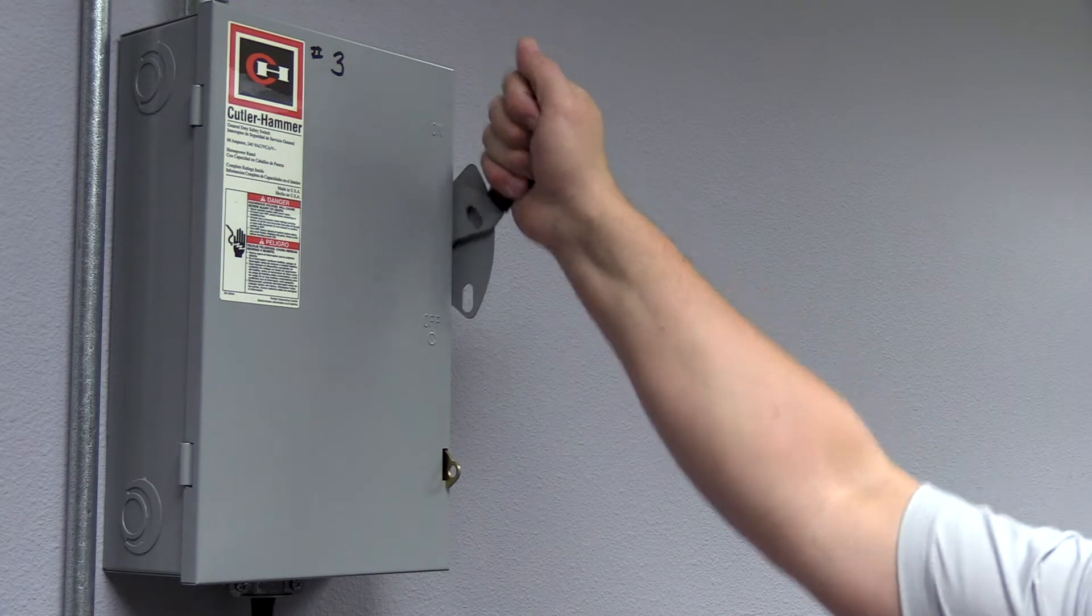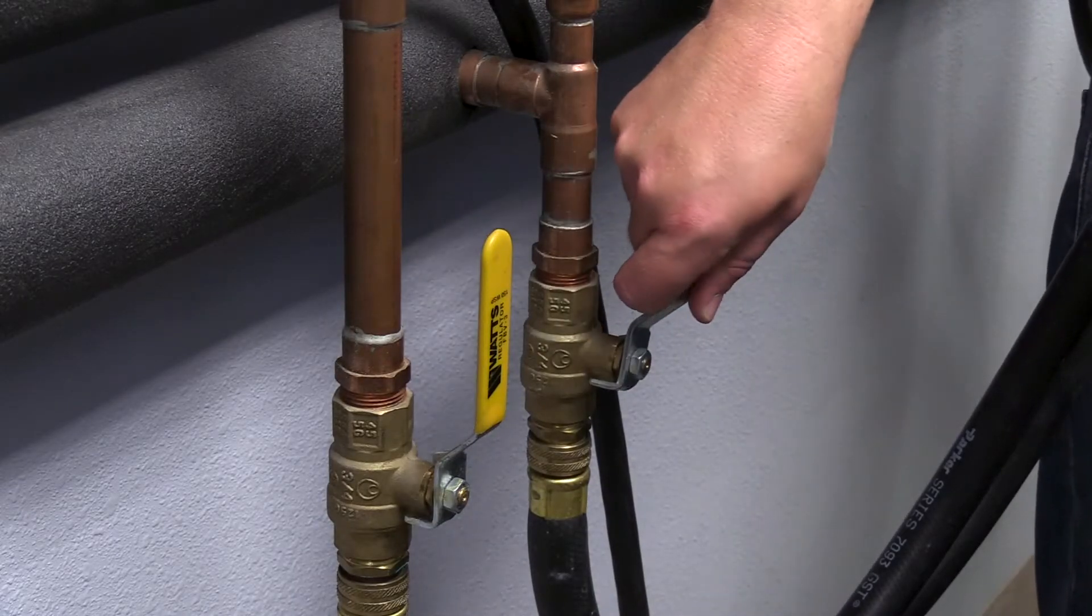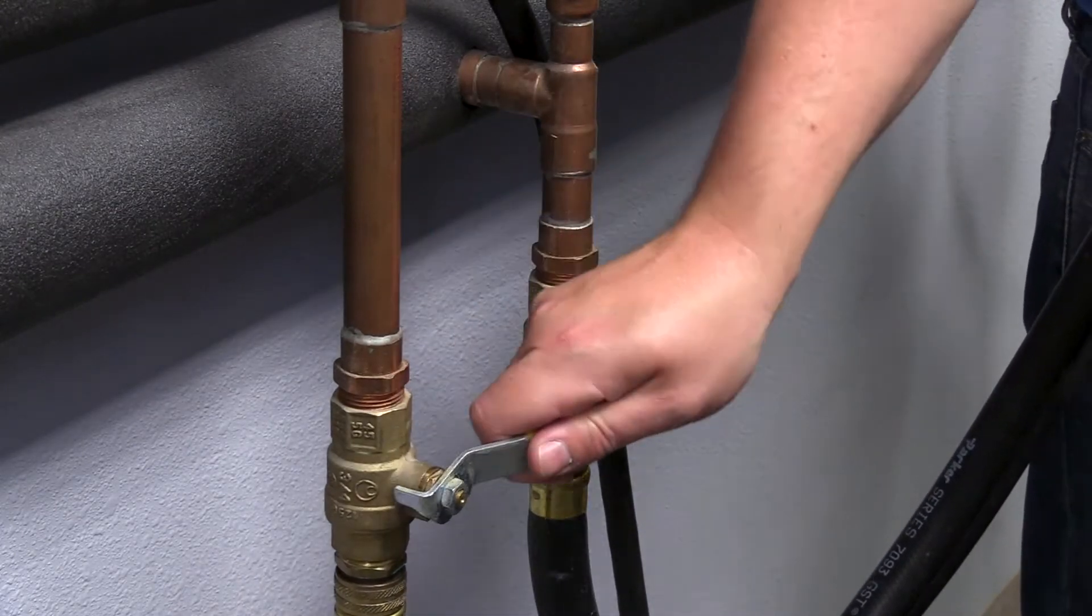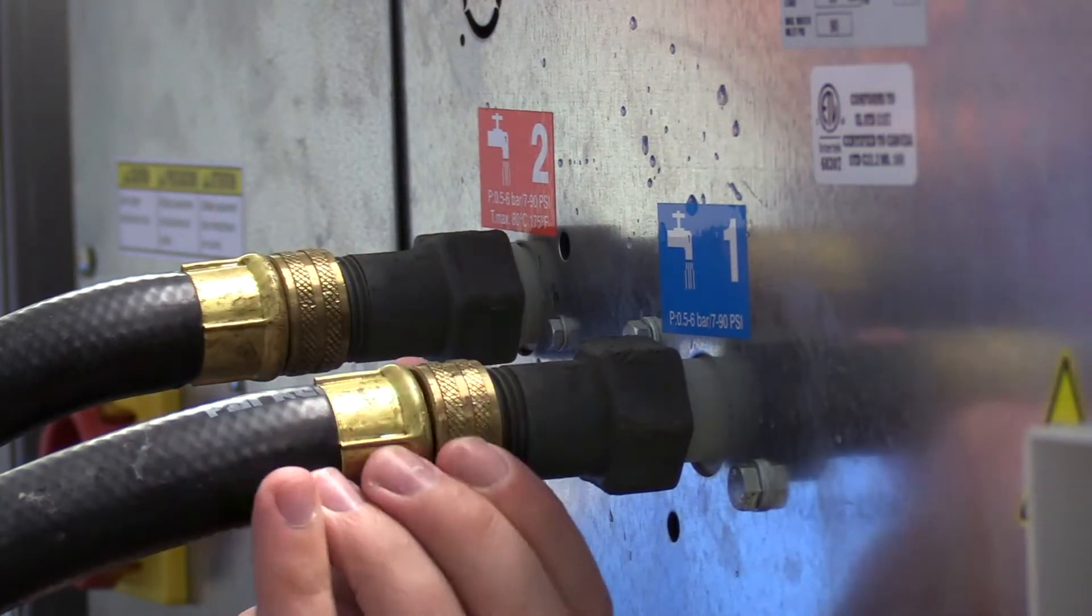First, disconnect power and shut off the water going to the washer. To eliminate excess water pressure, disconnect the water hose on the back of the washer.